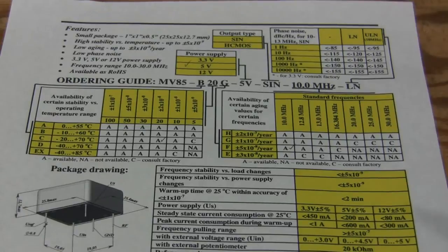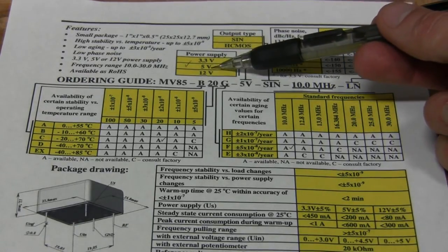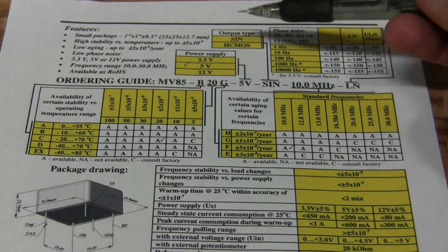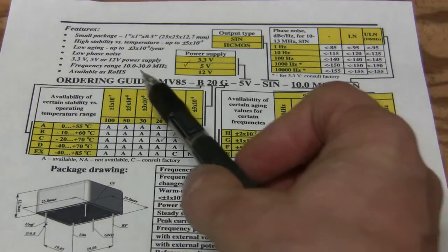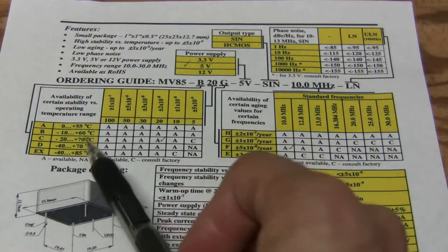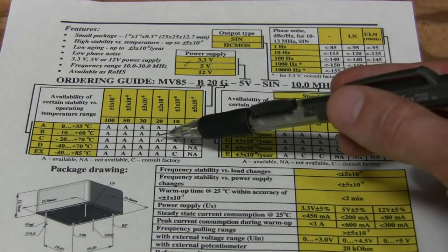Here is the datasheet. And my model is this, 5V sine wave. And here is a table for temperature stability. Here are different ranges of temperatures and different stability. My model is this one.